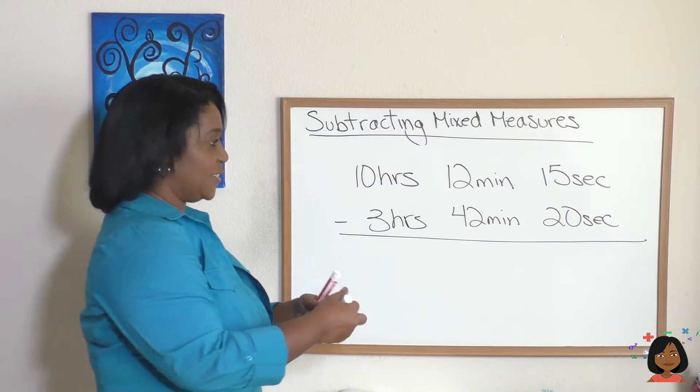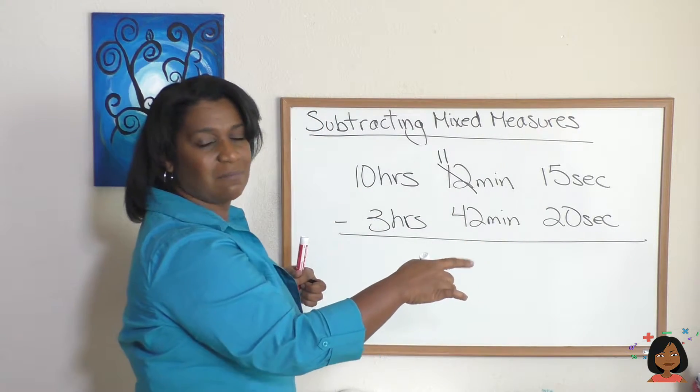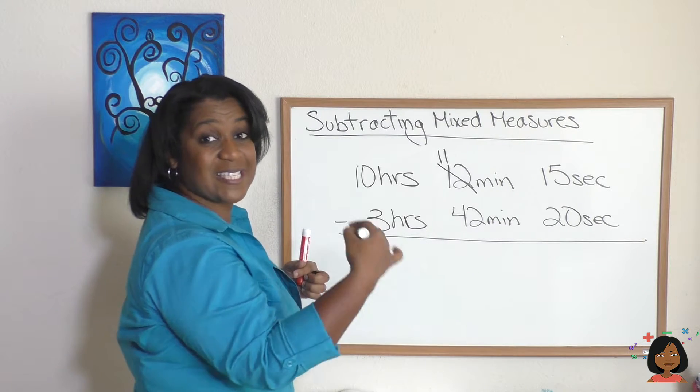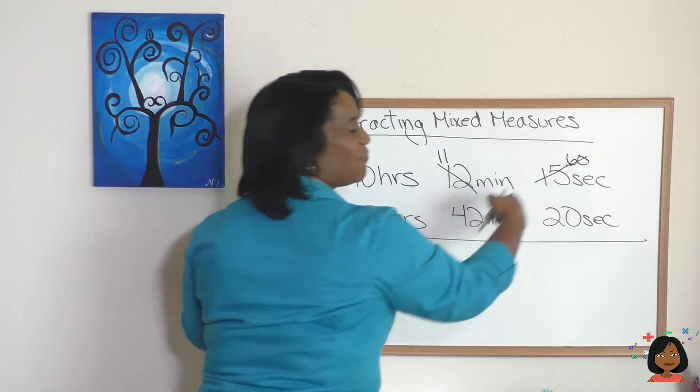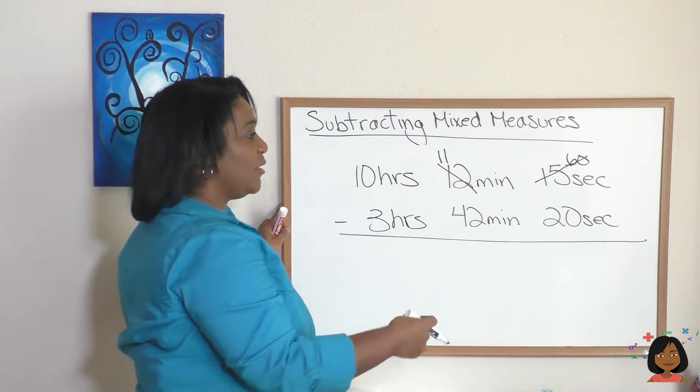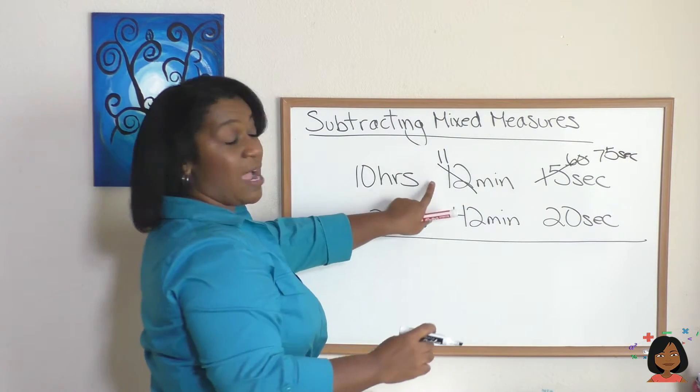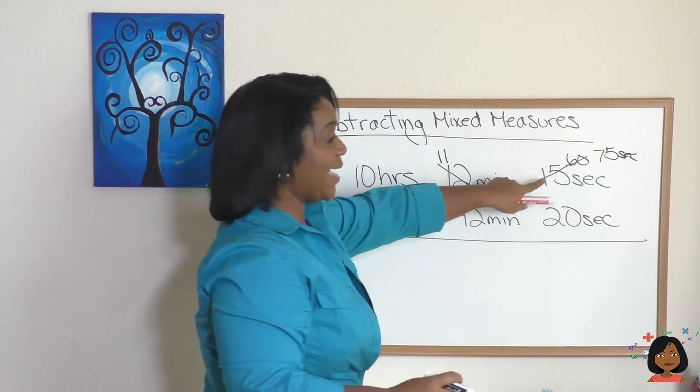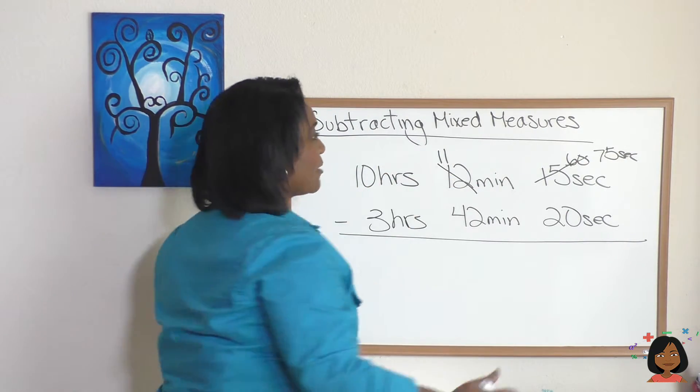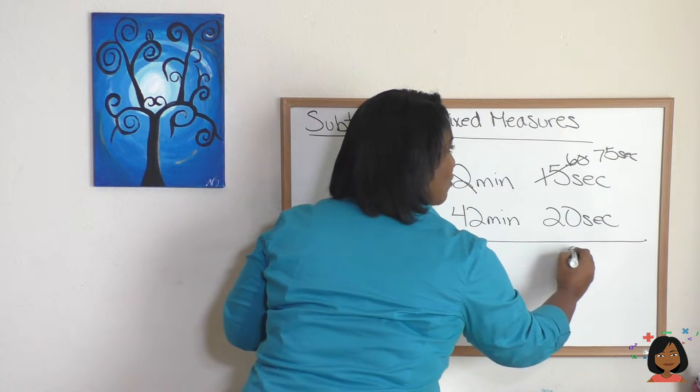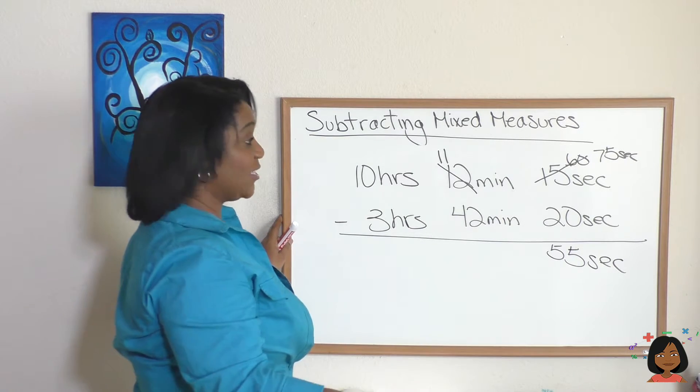We're gonna take some minutes and bring it over to the seconds. Cross out our 12, it goes to 11, but we're bringing over 1 minute. We're gonna convert it. Let's convert it to 60 seconds. Cross out my 60 and my 15, and adding those together we get 75 seconds. Let me repeat that because I said that kind of fast. I brought 60 over, I added 60 to my already 15, now I've got 75. Now I can subtract. 75 minus 20 is 55 seconds.